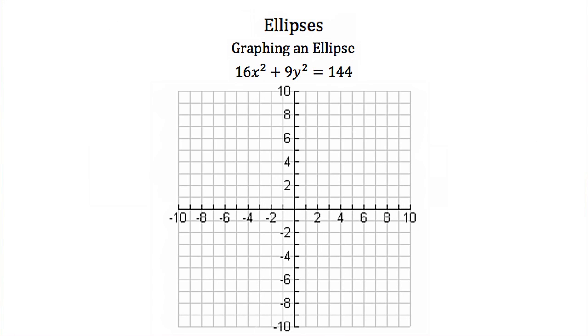Now the last thing we have to do is learn how to graph an ellipse. Our equation that we're going to graph is 16x squared plus 9y squared is equal to 144. Now this is not in the standard form of an ellipse equation. So we're going to put it in the standard form.